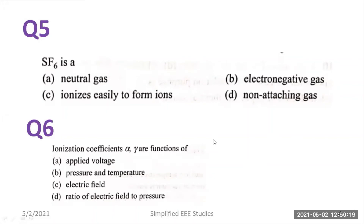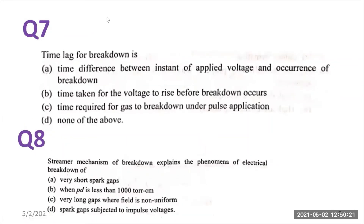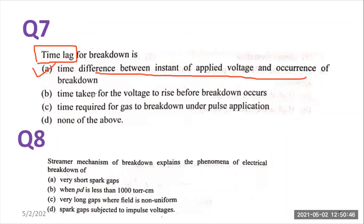Let us discuss another question: the time lag of breakdown is — option A: the time difference between the instant of applied voltage and occurrence of breakdown; option B: the time taken for the voltage to rise before breakdown occurs; option C: the time required for the gases to break down under pulse application; option D: none of the above. The right answer is option A — time difference between the instant of applied voltage and occurrence of breakdown.